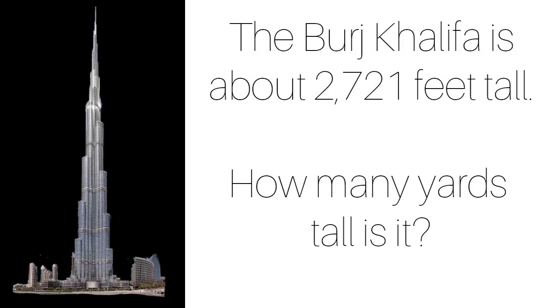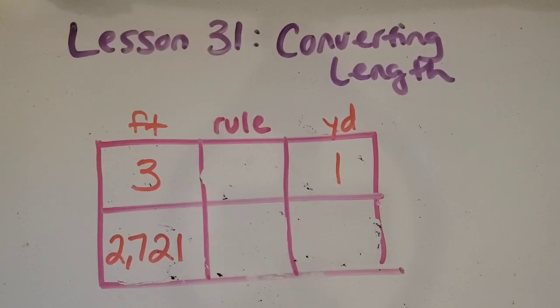All right here's another real life example I thought would be cool. So the Burj Khalifa in Dubai is the tallest building in the world and it's about 2,721 feet tall. I thought we could figure out how many yards tall it is. So why don't you pause the video and try this one out. Make a table that has feet and yards. Write down what you know which is that there's three feet in one yard and think about what the rule would be. Then we can do that to the 2,721.